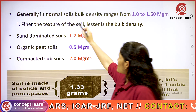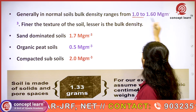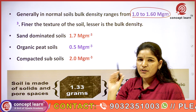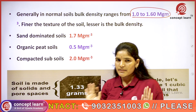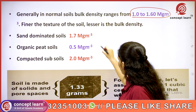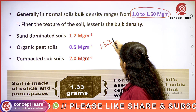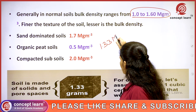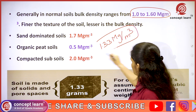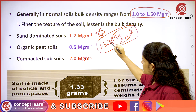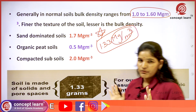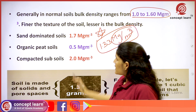Generally, normal soil bulk density ranges from 1 to 1.6. On average, the bulk density of a normal soil is 1.33 megagram per meter cube. This value is very important for exams. The units are also important: 1.33 megagram per meter cube is the general bulk density of a soil.